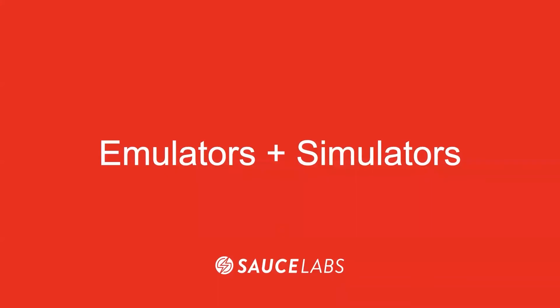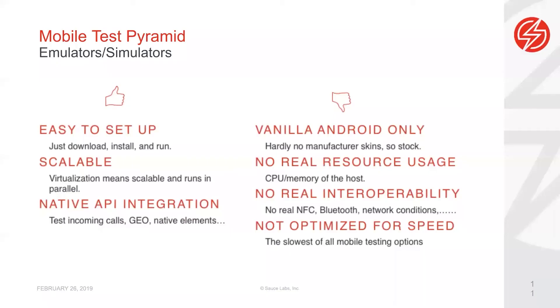Now let's talk about emulators and simulators. Think of them like virtual machines of an operating system for mobile — you can have an iOS simulator or an Android emulator running either locally or in the cloud. They're really easy to set up: just download, install, and run them. They're scalable — like little virtual machines or even containers — and you can run multiple in parallel. They also have native API integration, so you can test incoming calls, geolocations, and native elements to see how your native application actually behaves.